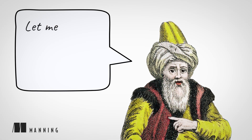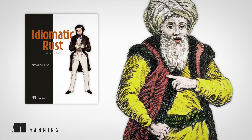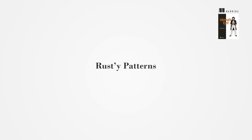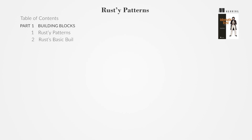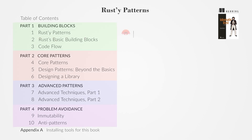Let me tell you about another great Manning book: Idiomatic Rust — Code Like a Rustacean, written by Brendan Matthews. This book aims to elevate your Rust programming skills by exploring design patterns, idioms, and conventions prevalent within the Rust community.